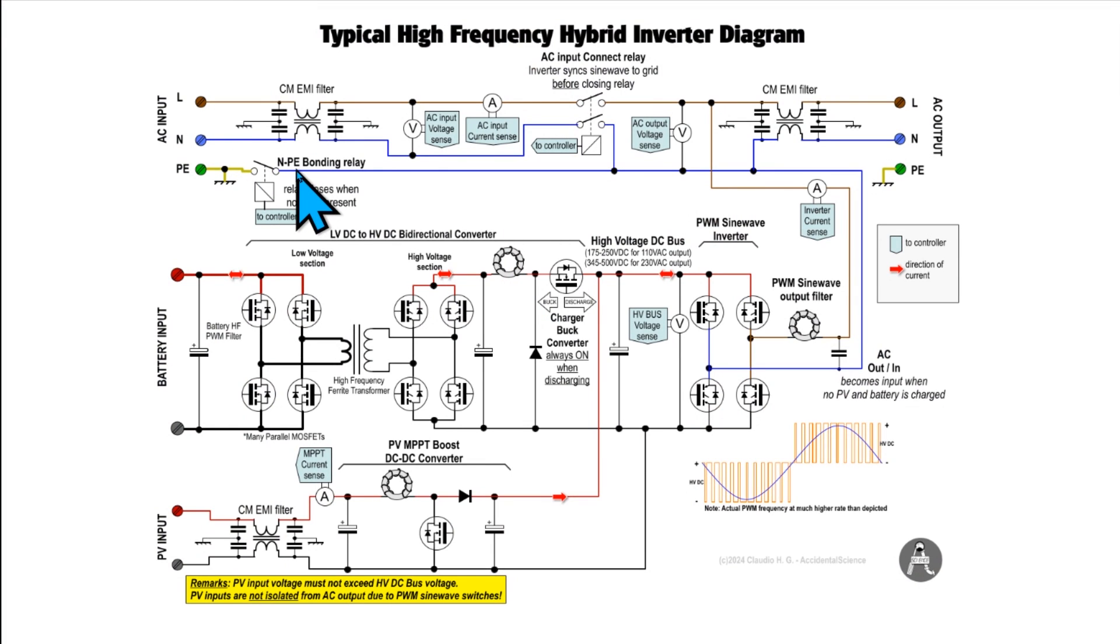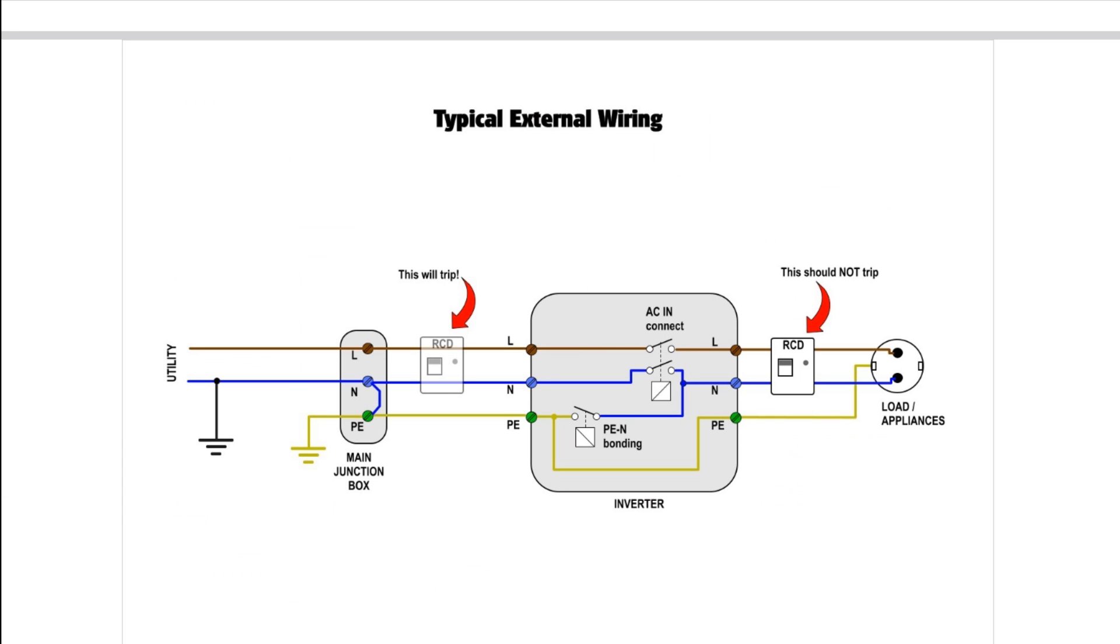An important critical point is the neutral protective earth bonding relay. This is important because when we open this switch, this relay, and we detach the inverter from the grid, the neutral now becomes floating in respect to the protective earth. So it is necessary to close this contact to restore this connection, this bond with the ground.